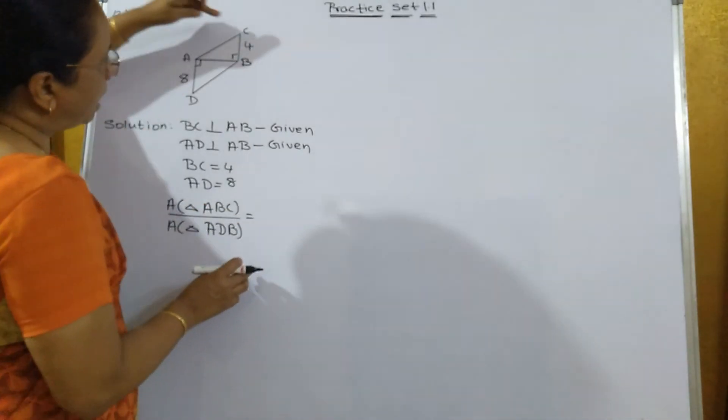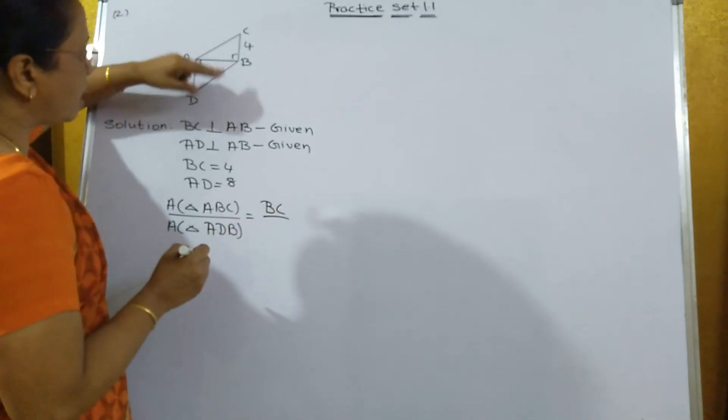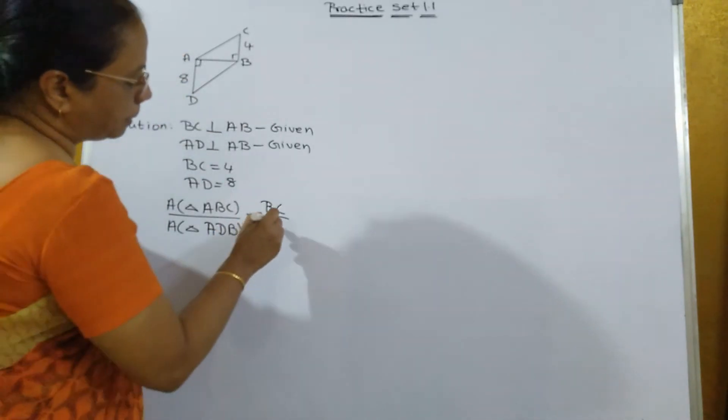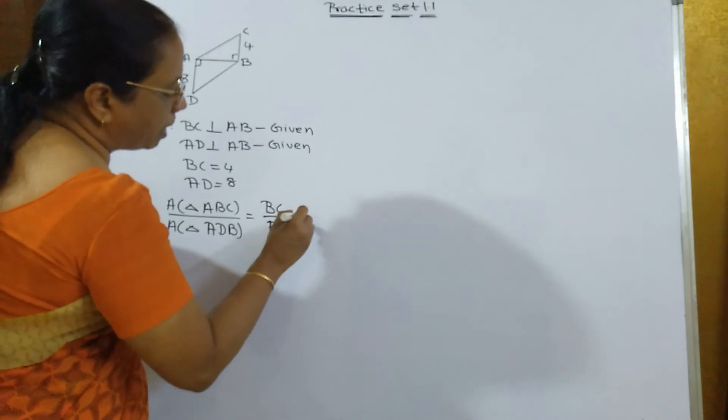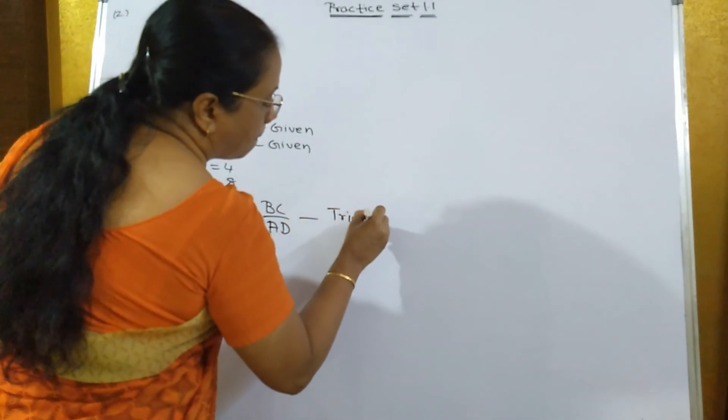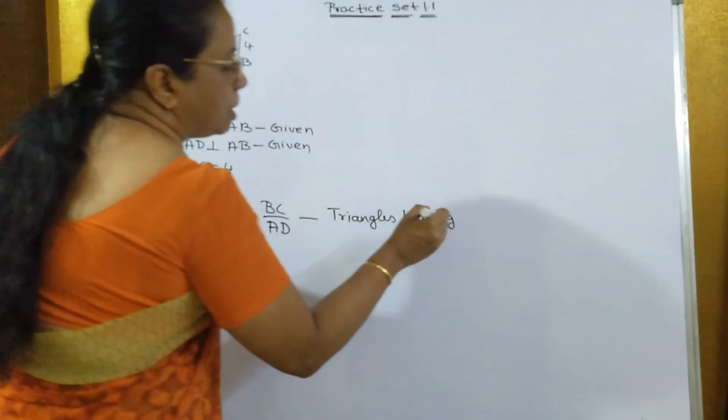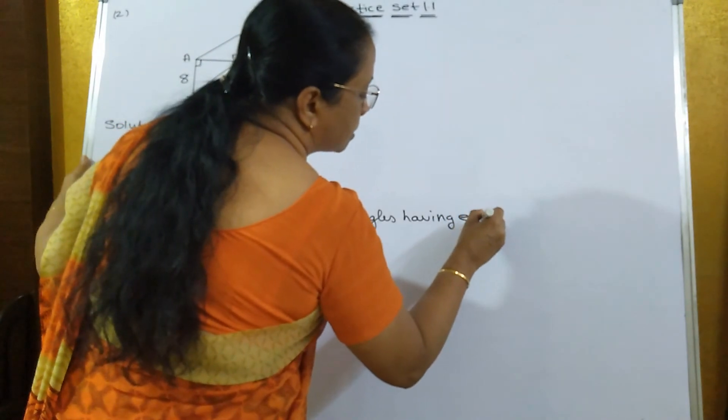So area of triangle ABC, the height is BC. And area of triangle ADB, the height is AD. Reason what you will write? Triangle having equal base.